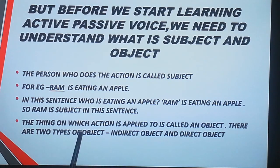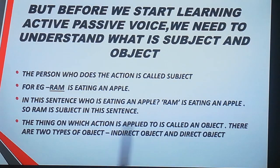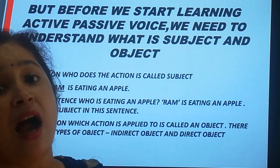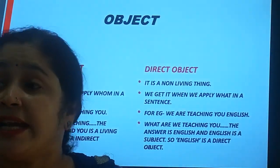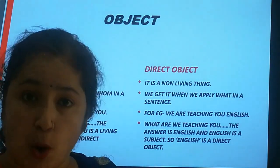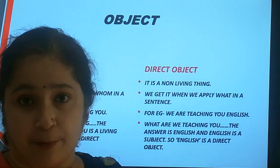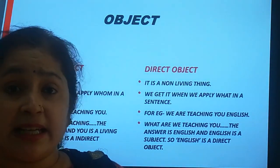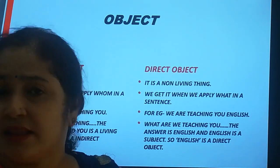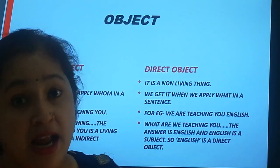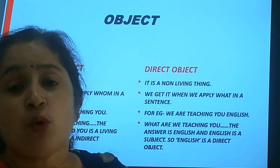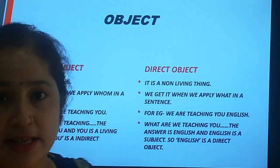The thing on which action is applied to is called an object. There are two types of object: direct object and indirect object. Indirect object is a living being, and indirect object is a non-living thing. When we apply 'whom' in a sentence, then we get indirect object. And when we apply 'what' in a sentence, then we get direct object.